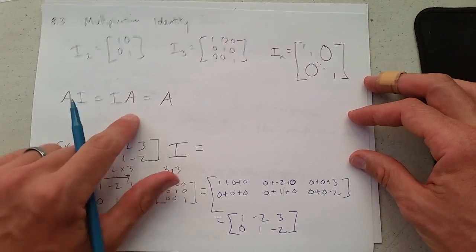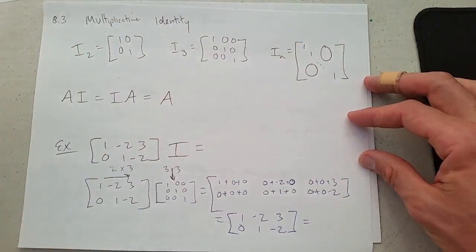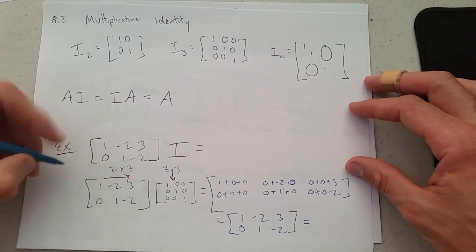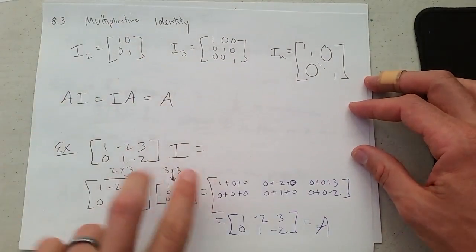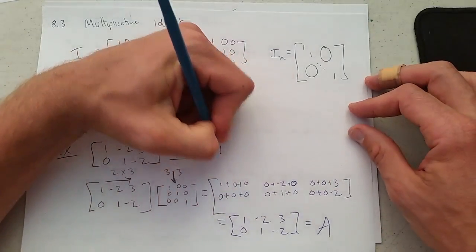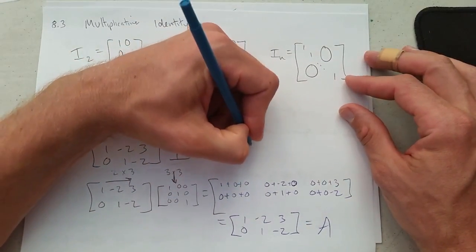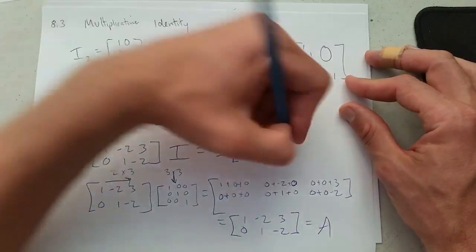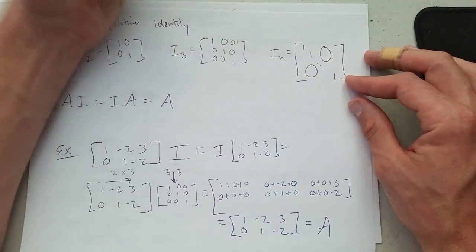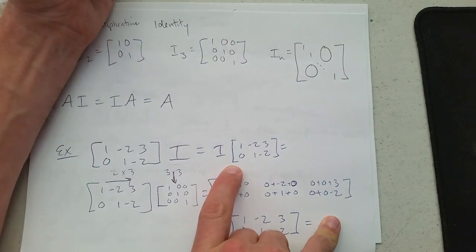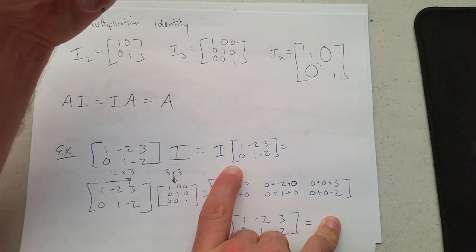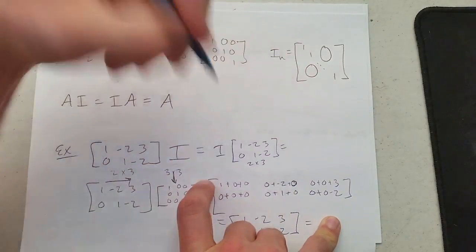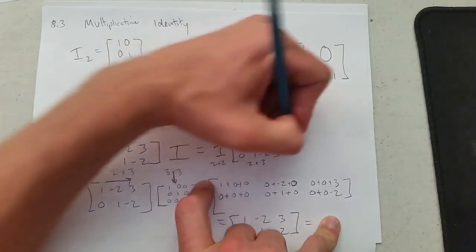Now AI should be equal to IA. And of course, this is A. If I call this first one A, this would just be A. Now if I switch the order, I have to be careful here. We get a different identity. What size should this identity be? This identity, so we have our 2 by 3 here. This identity should be 2 by 2.